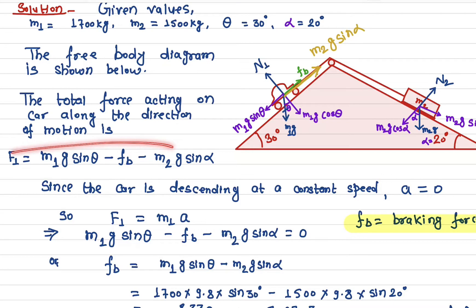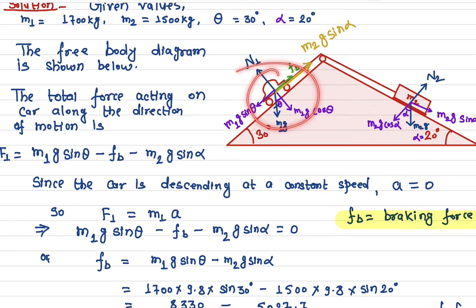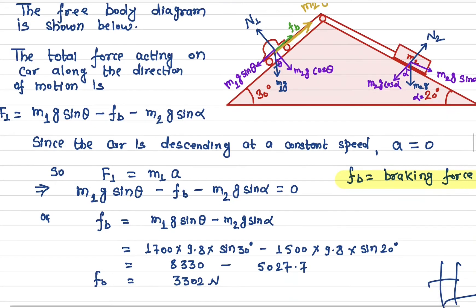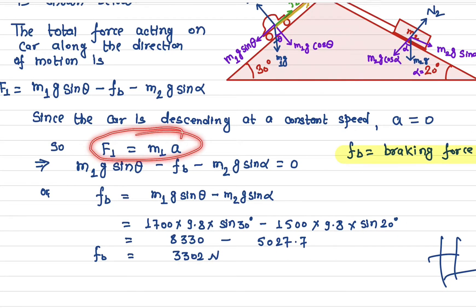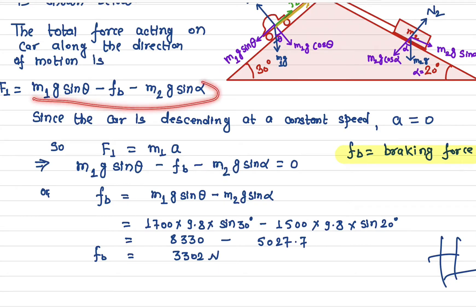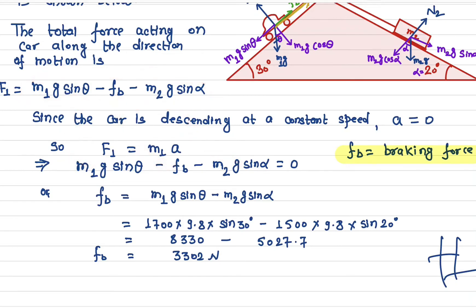This is the total force on the car. Since the car is descending at a constant speed, the acceleration is zero — constant speed means no change in velocity, so acceleration is zero. By Newton's second law, force equals mass times acceleration, and with acceleration equal to zero, the total force must equal zero: m1g sine theta minus Fb minus m2g sine alpha equals zero.